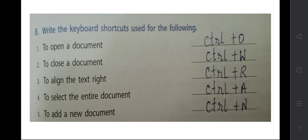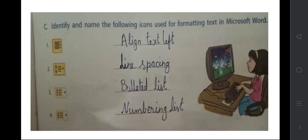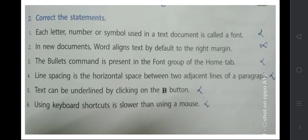Identify the name of the following icons used for formatting text in MS Word. The first icon is for align text left, the second icon is for line spacing, the third icon is for bulleted list, and the fourth one is for numbering the list.